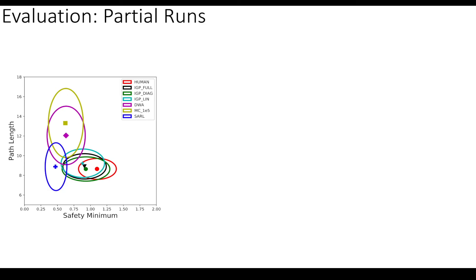We also see that the IGP variants, which are in black and cyan and in green, get somewhat close, but they still have problems. But they're getting closer to the human benchmark. Whereas state-of-the-art reinforcement learning planner in blue here turns out to be overly aggressive. So it has shorter path lengths on average, but much smaller safety minimums. And other heuristic-based approaches tend to be over-cautious. So their path lengths are very long.